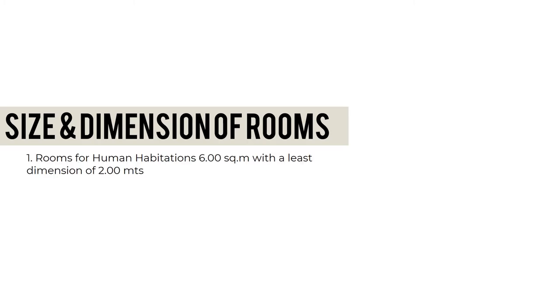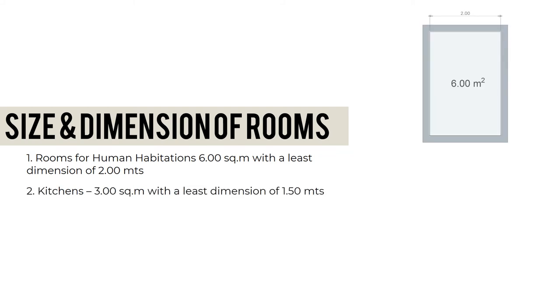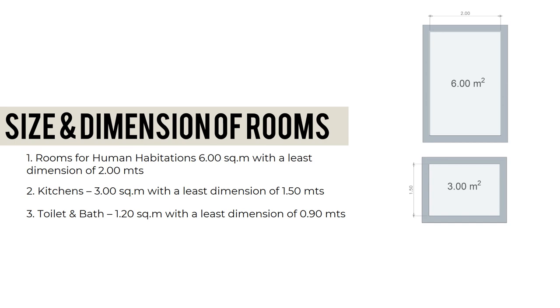Room size requirements: rooms for human habitation must be a minimum of 6 square meters with a least dimension of 2 meters. Kitchens must have a minimum of 3 square meters with a least dimension of 1.5 meters. Toilets and baths must have a minimum of 1.2 square meters with a least dimension of 0.9 meters.